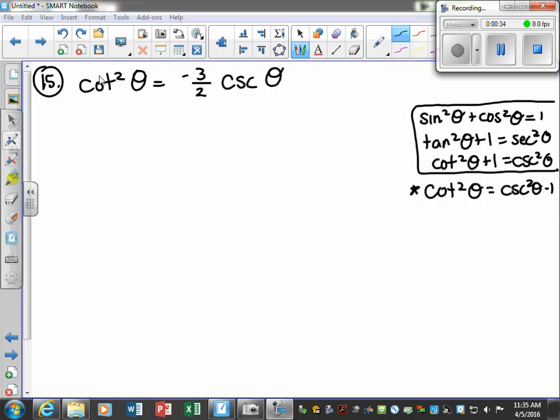So let's replace our cotangent squared with cosecant squared theta minus one. We're going to leave our right-hand side of the equation the same. Let's just carry it down.